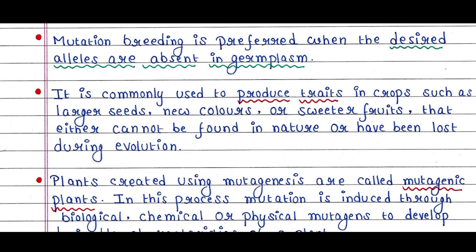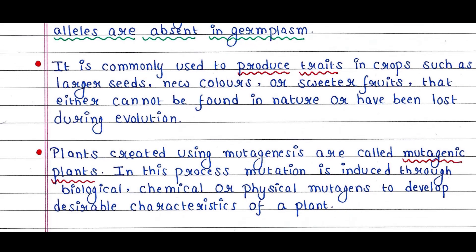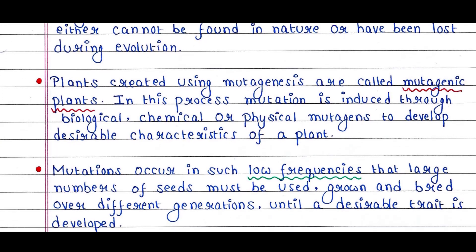Plants created using mutagenesis are called mutagenic plants. In this process, mutation is induced through biological, chemical, or physical mutagens to develop desirable characteristics of a plant. In our last lecture we already talked about different types of mutagens.